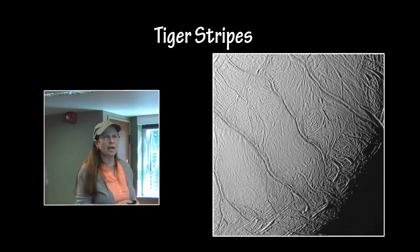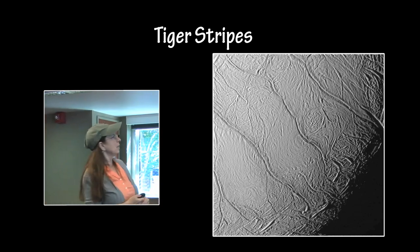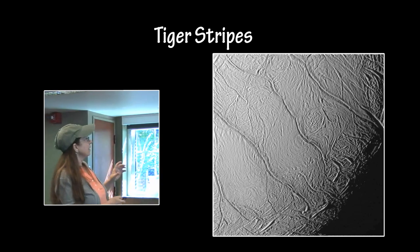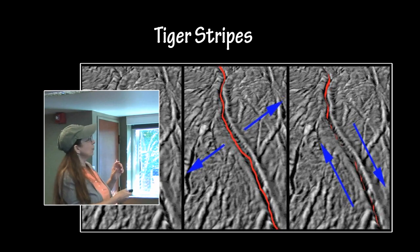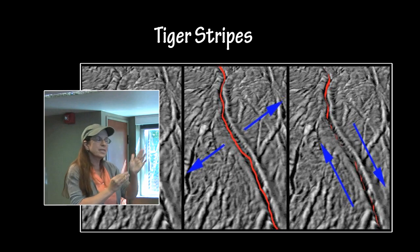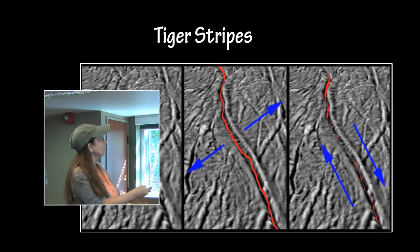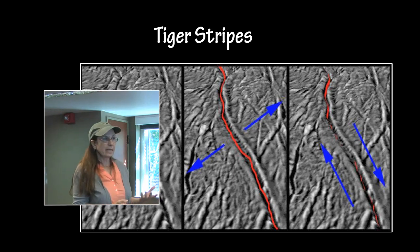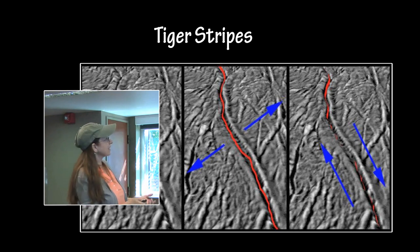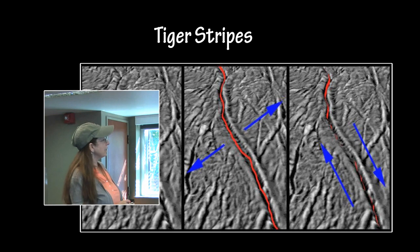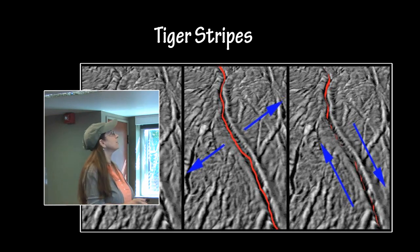These tiger stripes are produced by the gravity of Saturn in the southern polar region of Enceladus. Because of the tidal forces — sometimes pulling it apart, sometimes pushing it together, sometimes slipping it past each other — when it pulls apart or slips past, it allows the material underneath, which is being heated by all of these tidal stresses, to eject water and material from underneath the surface of Enceladus.